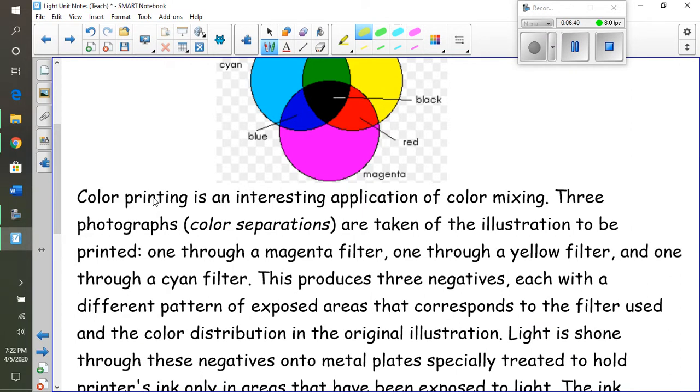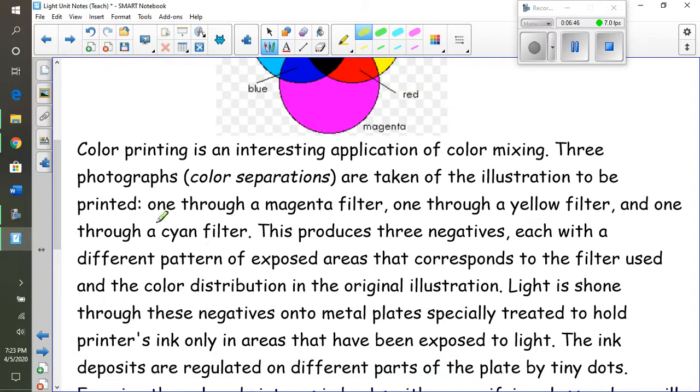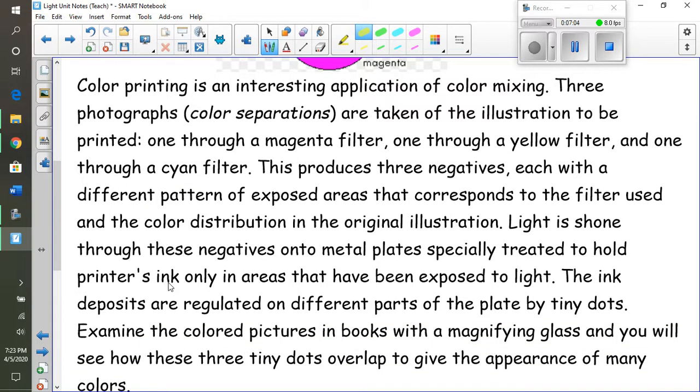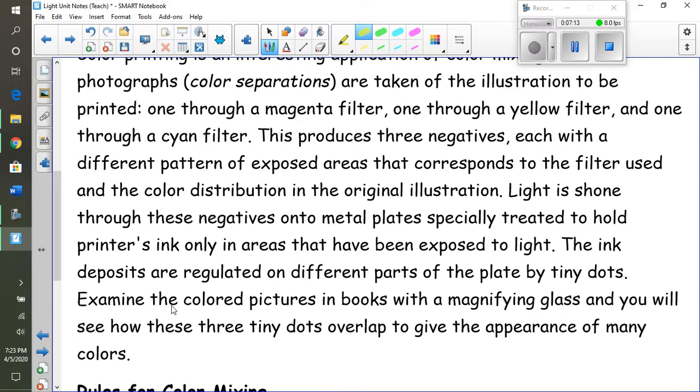Three photographs are taken of the illustration to be printed: one through a magenta filter, one through a yellow filter, one through a cyan filter. This produces three negatives, each with a different pattern of exposed areas corresponding to the filter used and the color distribution from the original illustration. Light is shown through these negatives onto metal plates that are specially treated to hold the printer's ink only in areas that have been exposed to the light. The ink deposits are regulated on different parts of the plate by tiny dots. Examine the color pictures in any book with a magnifying glass and you will see those tiny dots overlapping to give the appearance of many colors.